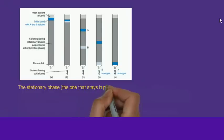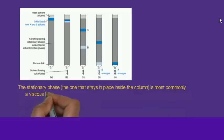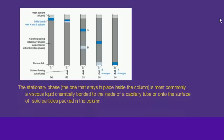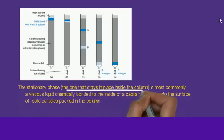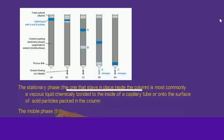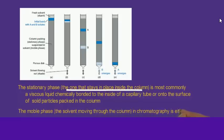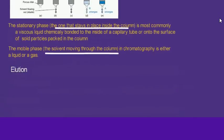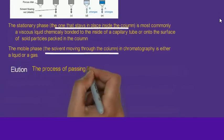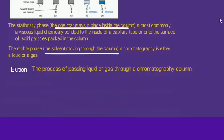The stationary phase stays inside the column and is most commonly a viscous medium placed onto the surface of the column. The mobile phase — the solvent — is moving throughout the column in chromatography; it is either liquid or gaseous in nature. The whole process of passing liquid or gas throughout the column is called elution.